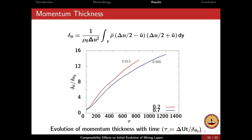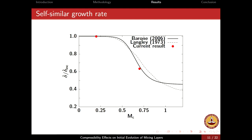This shows how the momentum thickness evolves with time — the momentum thickness is scaled by the initial momentum thickness and plotted against non-dimensional time. There is a significant reduction in growth rate at higher Mach number, which is already well known. The momentum thickness is defined using density-weighted (Favre) averages for velocities, with fluctuations used to calculate turbulence statistics. The normalized self-similar growth rate versus Mach number shows agreement with existing empirical curves from Barone and Langley, which are empirically obtained.